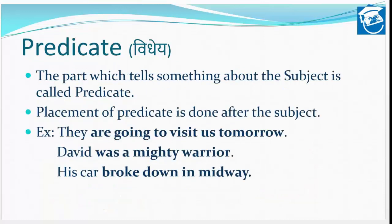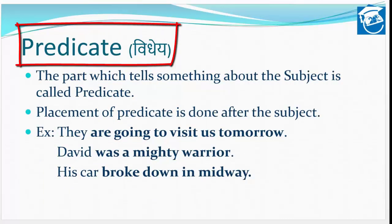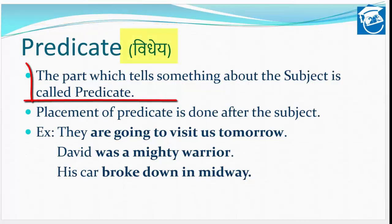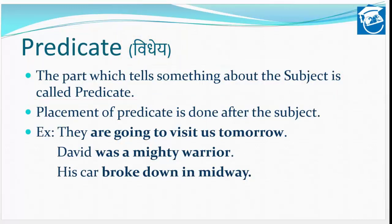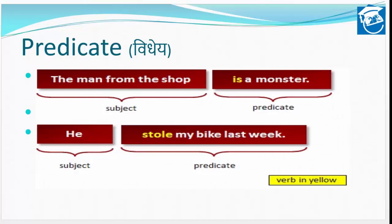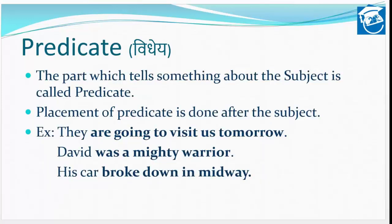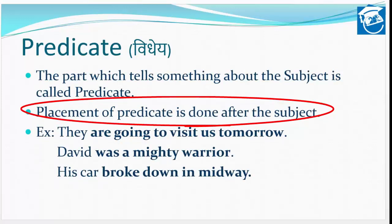Now let's see predicate. Predicate ka arth hota hai vidhey. The part which tells something about the subject is called predicate. Jo English sentence mein subject — vishay vastu — ko aur explain karta hai, uske baare mein detail deta hai ya uske baare mein kuch bhi batata hai, use hum predicate kehte hain, jise Hindi mein vidhey kaha jata hai.